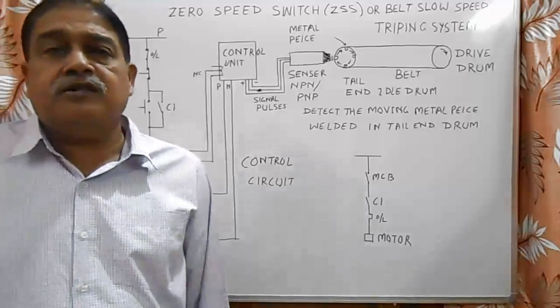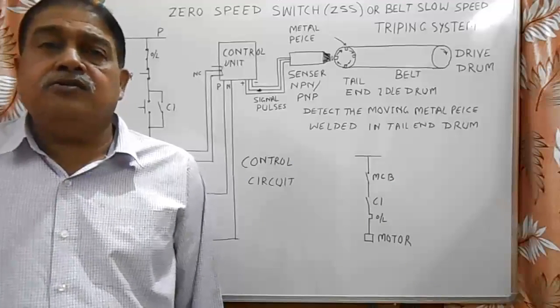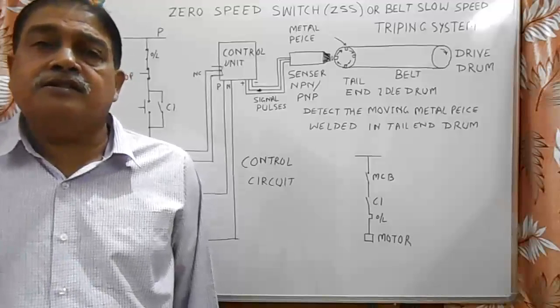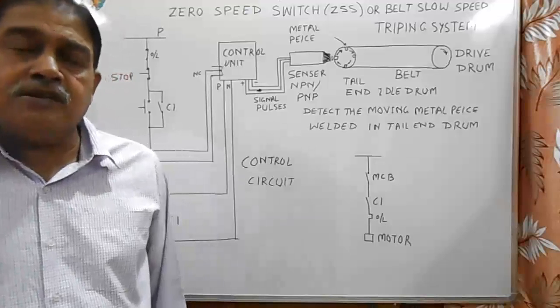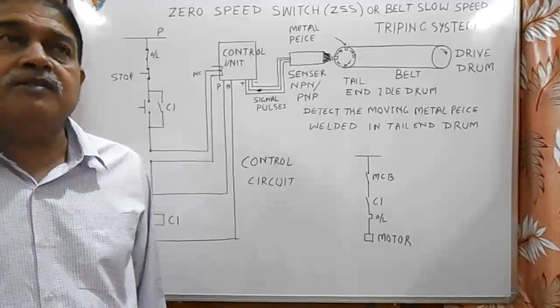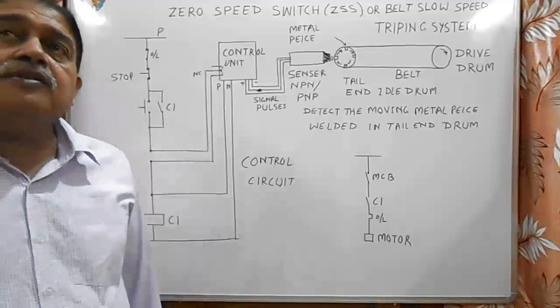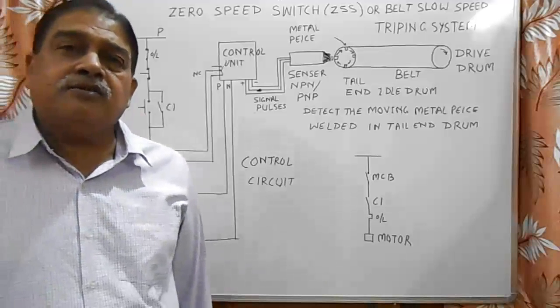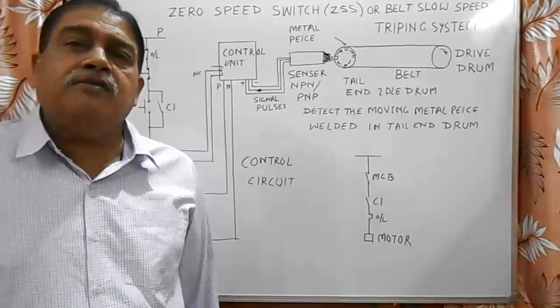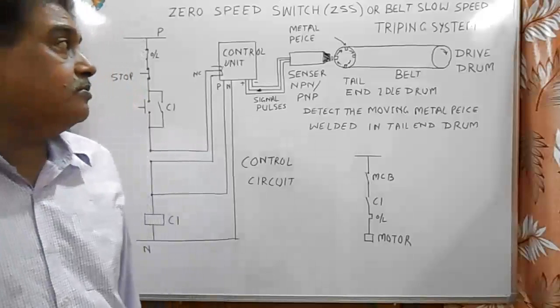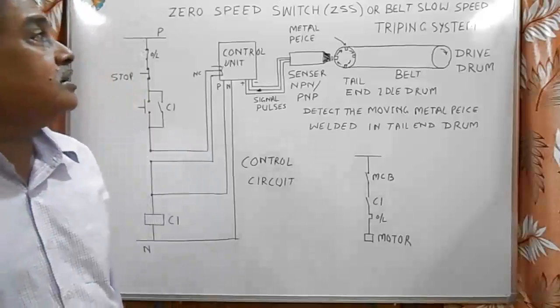Friends, good morning. Welcome to my YouTube channel. Today's topic is Zero Speed Switch. This system is used in conveyor belts in industrial systems where if belt speed comes below the set value, then the belt must be tripped. For that, we use ZSS switch or belt slow speed switch.